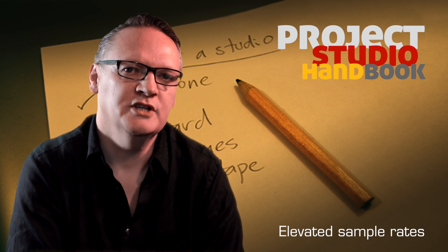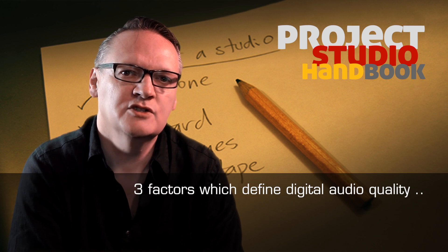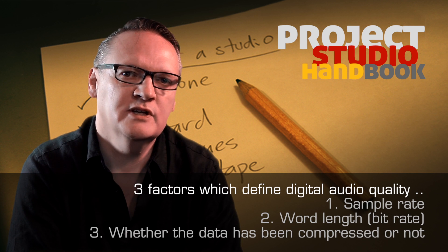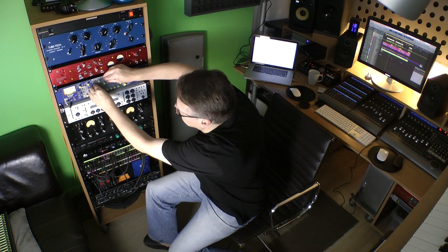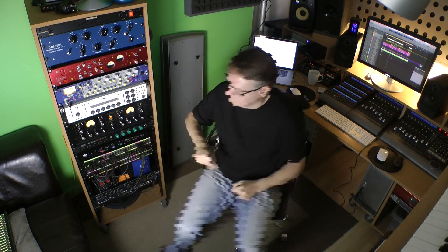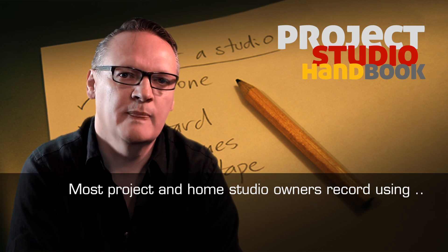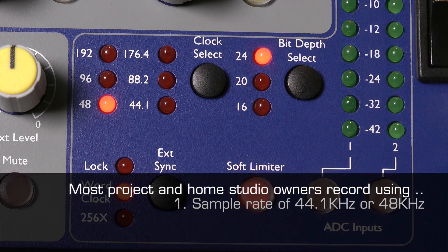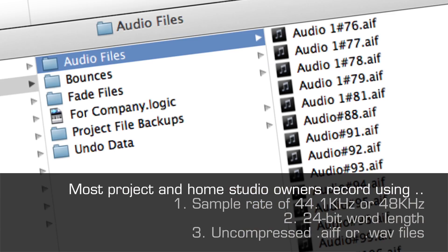The quality of digital audio is defined by three primary factors. They are sample rate, word length, and whether the signal has been compressed or not and if so by how much. In the project and home studio most owners record, process, and mix using 44.1 or 48kHz sample rate, 24-bit word length, and uncompressed AIF or WAV files.